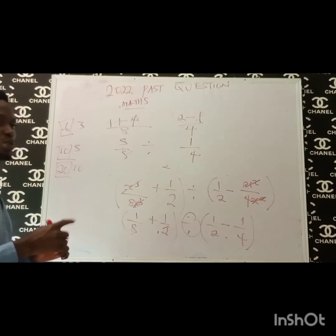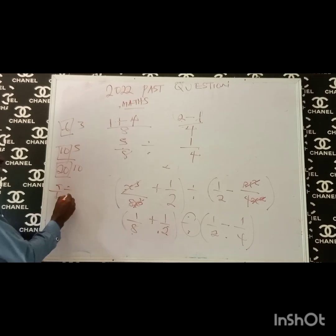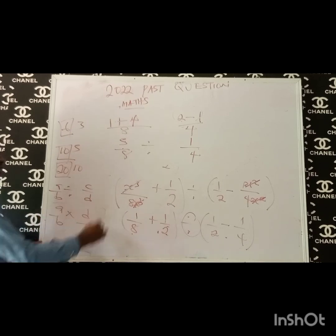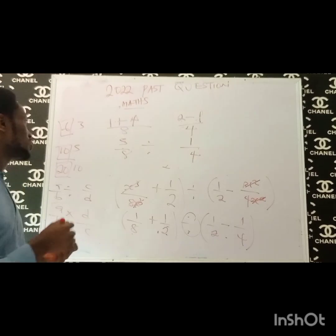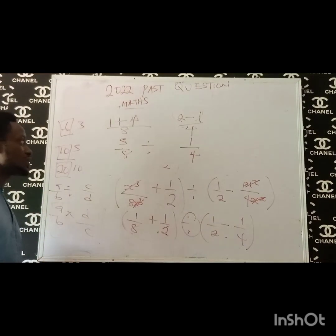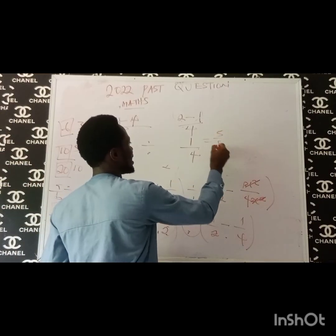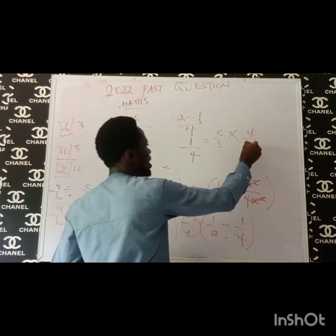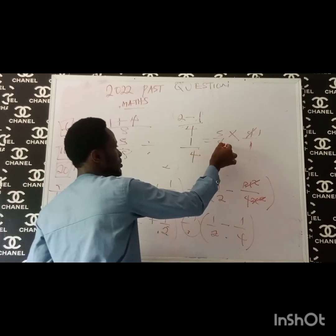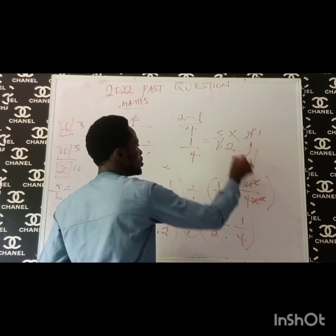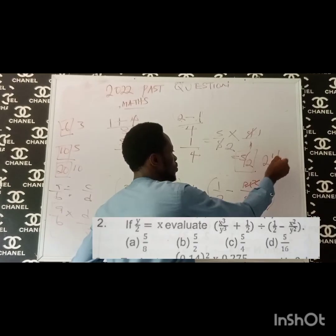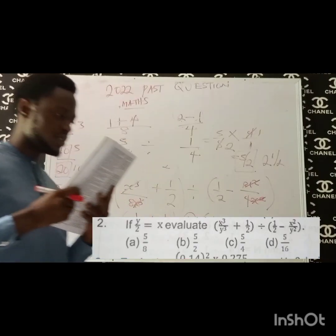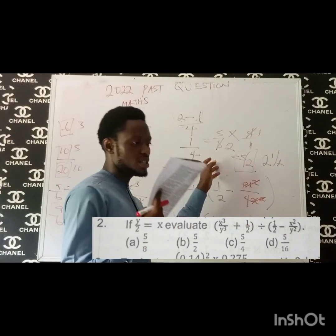Now what would this give us? You know how it goes: A over B divided by C over D is equal to A over B times D over C. Please take note of this rule. So this means 5 over 8 times 4 over 1. The 4 cancels with the 8 to give 2. So this will be 5 over 2. Either 5 over 2 or as a mixed fraction, 2 and 1 over 2. Let me check if we have this in the options — yes, we have option B as 5 over 2.